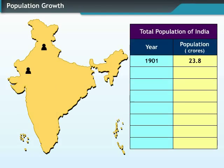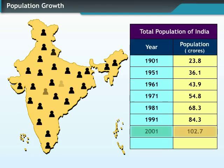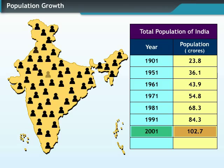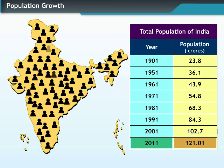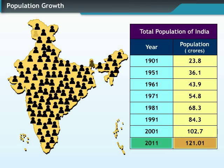In 1901, India's population was 23.8 crores. In 2001, the population was 102.7 crores. In a period of 100 years, India's population grew four times. In the 2011 census, the population was recorded at 121.01 crores.